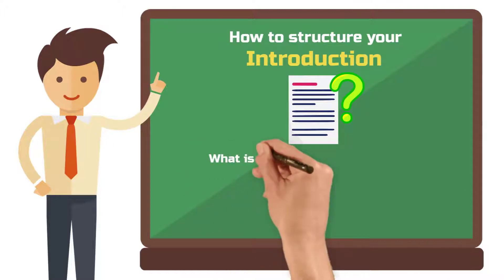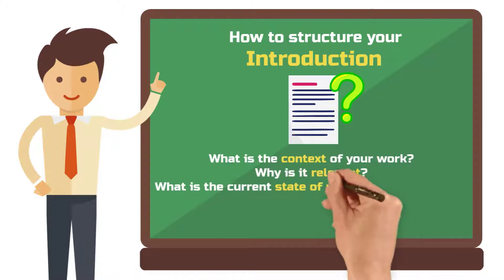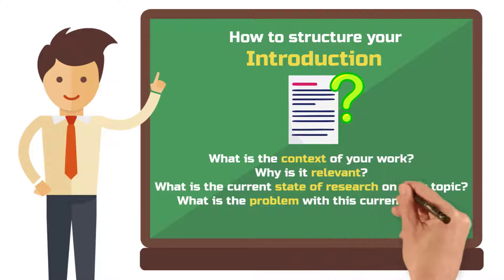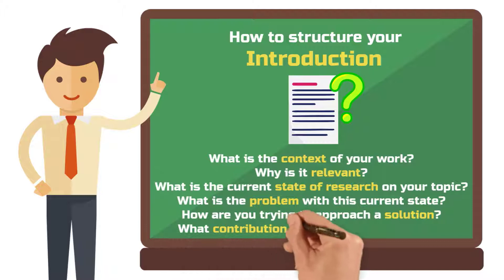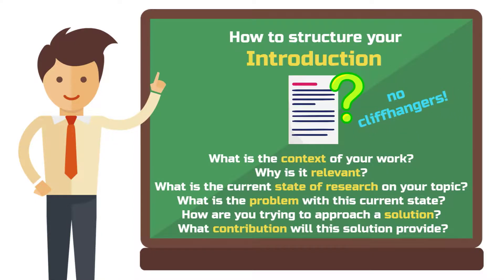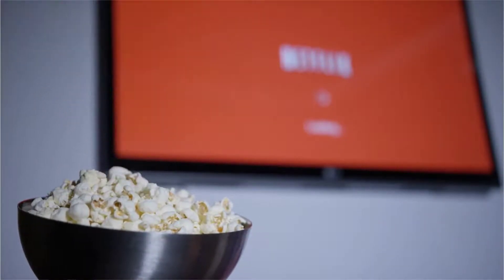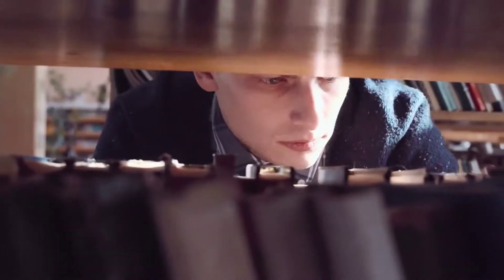What is the context of your work? Why is it relevant? What is the current state of research on your topic? What is the problem with this current state? And how are you trying to approach a solution? What contribution will this solution provide? You should try to tease as little as possible — meaning, don't throw open questions into the room and leave them unanswered. Rather, remain as concrete as possible and closely tied to the literature with appropriate references.